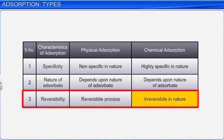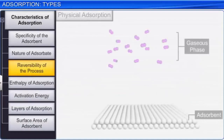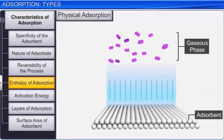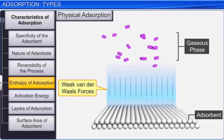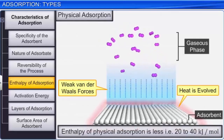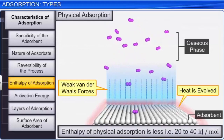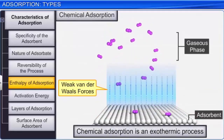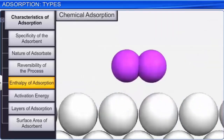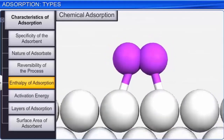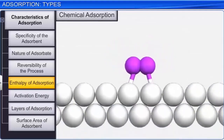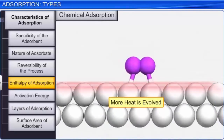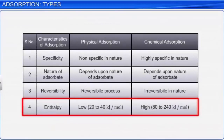Let us discuss the enthalpy change associated with physical and chemical adsorption. In physical adsorption, since the Van der Waals forces of attraction are weak, the heat evolved or the enthalpy of adsorption is very little, around 20 to 40 kJ per mole. Chemical adsorption is also an exothermic process; however, surface compounds form and the forces involved are similar to chemical bonds, so a relatively high amount of heat is evolved, about 80 to 240 kJ per mole. Therefore, the enthalpy of physical adsorption is low, whereas the enthalpy of chemical adsorption is very high.